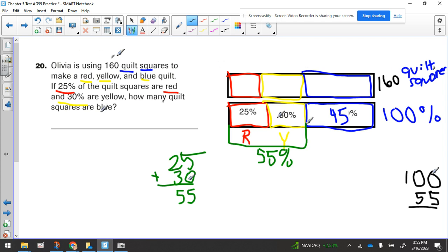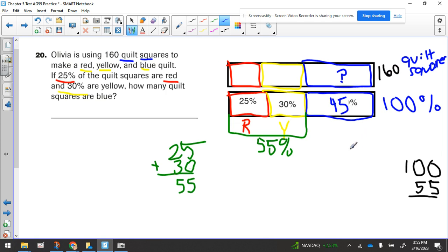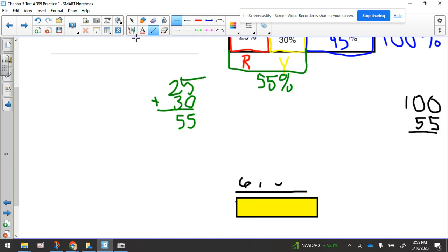All right. Let's read again what they want. How many quilt squares are blue? So they're looking for this number right here, which we can see visually that it would be less than 160, but a pretty good chunk of 160. So we have a couple ways that we can figure that out.